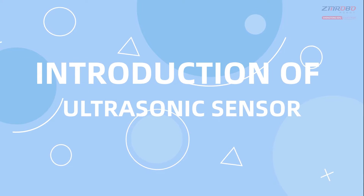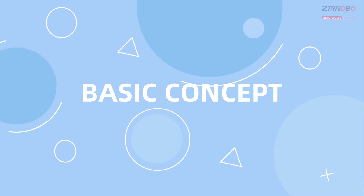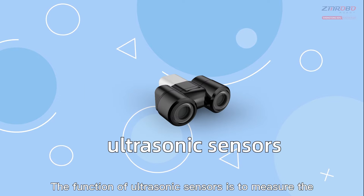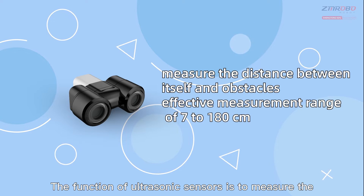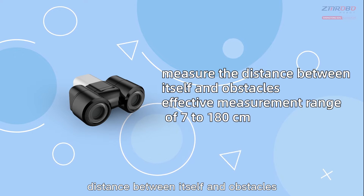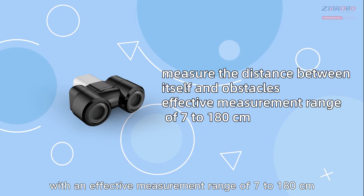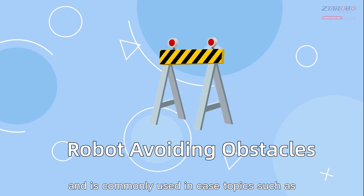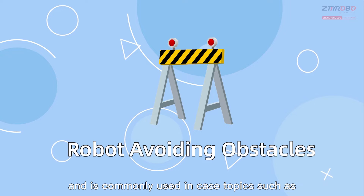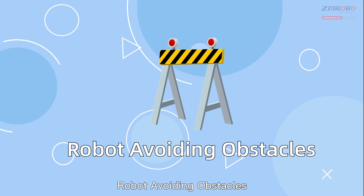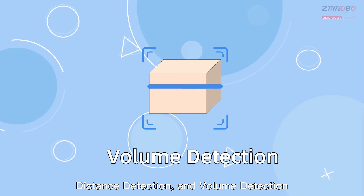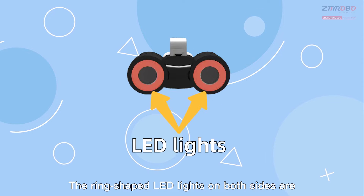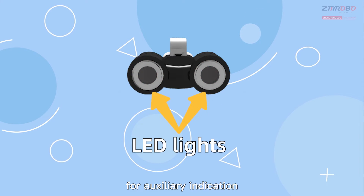Introduction to the basic concept: the function of ultrasonic sensors is to measure the distance between itself and obstacles, with an effective measurement range of 7 to 180 centimeters. It is commonly used in topics such as robot obstacle avoidance, distance detection, and volume detection. The ring-shaped LED lights on both sides are for auxiliary indication.